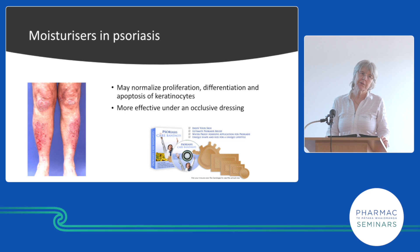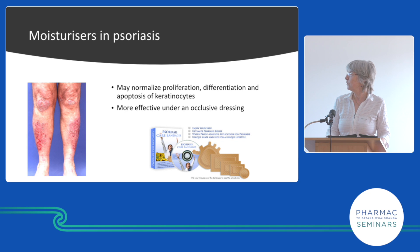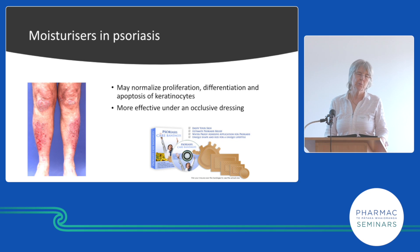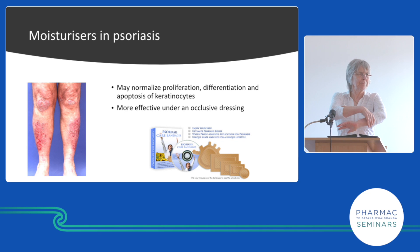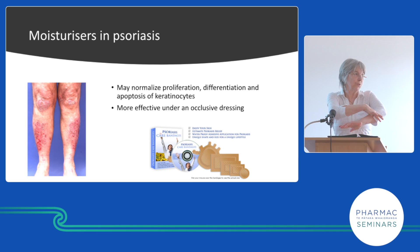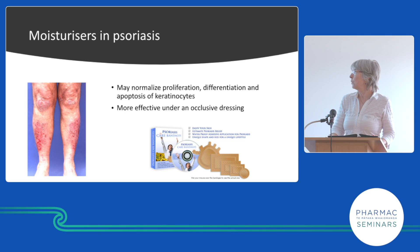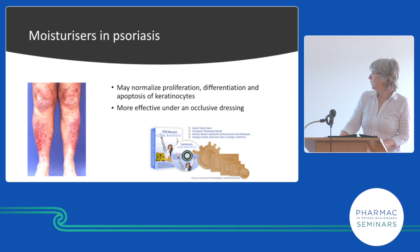We use moisturizers less in psoriasis, but they can be useful to make the scale transparent or to lift it off so it's not so obvious. They can actually improve psoriasis a bit without any other topical agents, particularly when occluded. For very localized psoriasis, patients could put a moisturizer on and then put some glad wrap over it. We used to be able to buy specially marketed thin dressings for psoriasis — basically Duoderm Extra Thin — you'd apply moisturizer, put the dressing on, leave it for a week, and that was helpful.